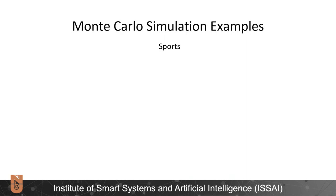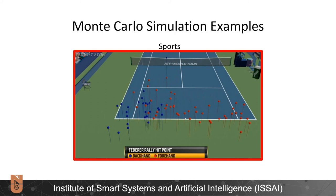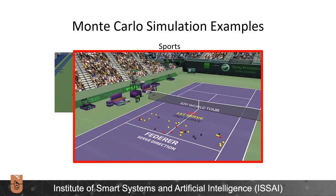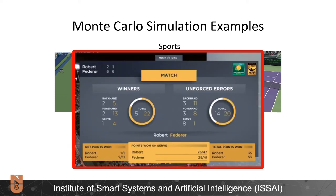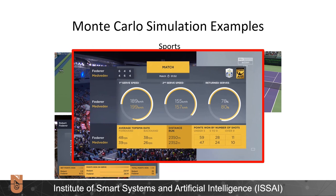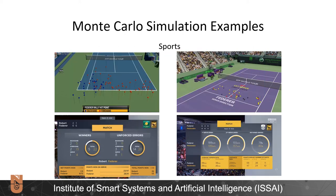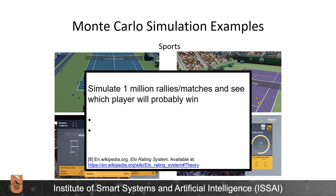Let's consider the final example for today, which is related to sports. If you have ever watched a tennis match, you probably saw the statistics they show — for example, location of rally hit points, serve directions, winners and unforced errors, and a table illustrating serve statistics such as first and second serve speed and return serves. There is a lot of statistics to consider when talking about sports, and it can get very complicated if you want to decide who's going to win a match based on numerical data. This is where Monte Carlo simulation becomes useful again. If you simulate 1 million rallies or even matches using these stats as input, you can predict the probability of winning for a player. This is a pretty standard product in the world of sports betting, computing the risk of betting on a particular player.